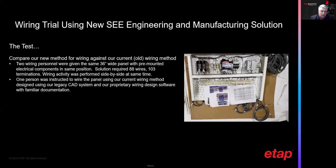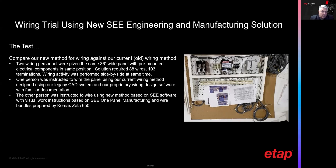The second person was instructed to wire using the new method based upon the CE Electrical Software output, as well as the visual work instructions from the C1 Panel Manufacturing software, and they would also use the wire bundles prepared by the Comax Zeta 650. The way that our wiring instructions are set up, they actually align one-to-one with each wire bundle. So when you pick up a wire bundle, it corresponds to the page or the information that you're looking at — both with the 3D model visualization as well as the wire list.